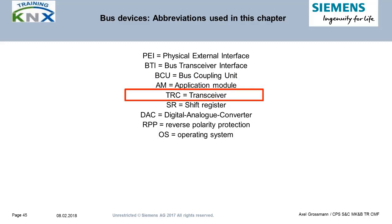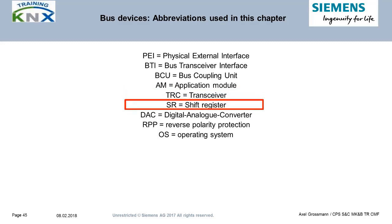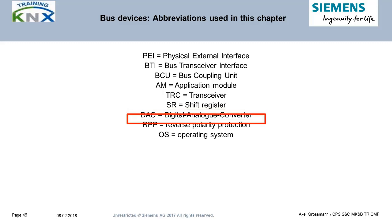TRC: the part of the BCU that deals with transmitting and receiving bus telegrams. Today it is only an ASIC; in the past it was a small electronic board inside a BCU. SR: shift register — in some applications, data between the AM and BCU are exchanged by means of a shift register. DAC: digital-to-analog converter, required if a separate dimming ballast has an analog control voltage input such as 0–10V DC. RPP: a feature of the TRC chip that prevents the electronics from being damaged if the bus wires plus and minus are mixed up due to reverse polarity.